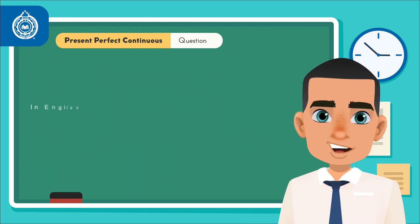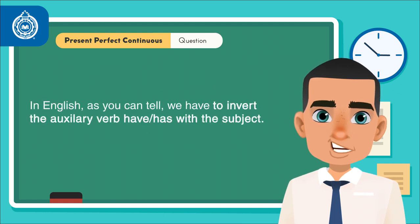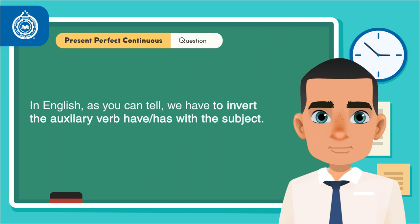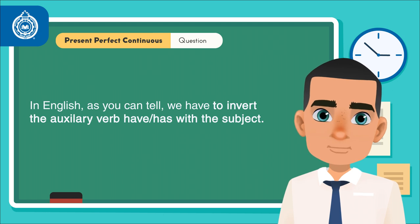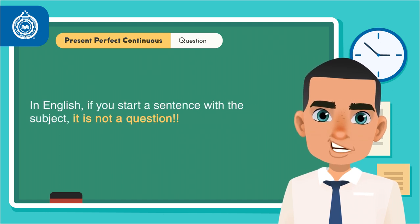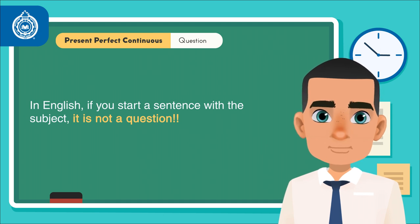In English, as you can tell, we have to invert the auxiliary verb have or has with the subject. This is very, very important. In English, if you start a sentence with the subject, it is not a question.